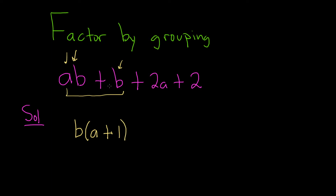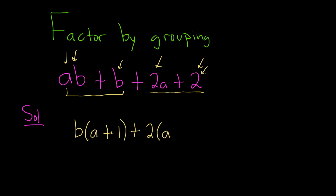So we've accomplished our first goal. Now we look over here and ask what can we factor out. It looks like a 2, because there's a 2 on both terms. So you put a plus 2 here. What do you multiply by 2 in order to get 2A? Well, A. And likewise, what do you multiply by 2 in order to get 2? Just 1.